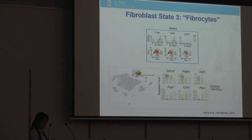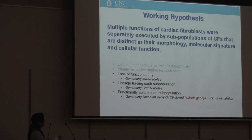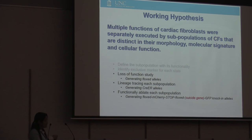For group three, this is very similar to what Pinto and Rosenzweig's group identified as fibrocytes, because they express both fibroblast markers and immune cell markers. We didn't do much further work on this group because other groups are also studying this interesting cell population. We are in the process of generating flox alleles, reporter alleles, and knockout alleles for these top genes. I'm very excited to continue testing our hypothesis.